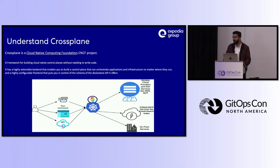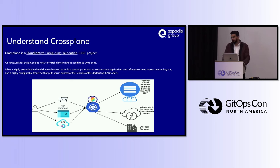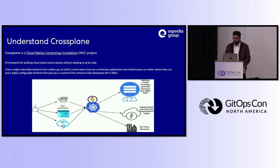With CrossPlane installed in a cluster, you can talk to multiple cloud providers and their services — S3 buckets, Google Cloud Storage, and so on. CrossPlane already provides all the provider API capabilities, including independent services like Kafka. CrossPlane can also help with on-premises deployments — for example, in the banking world or environments with GDPR restrictions where on-prem services are needed, CrossPlane can be an option to manage on-premises Kubernetes deployments.